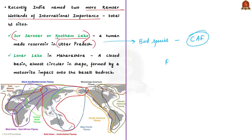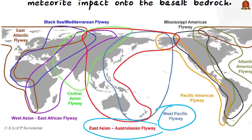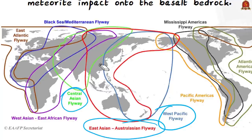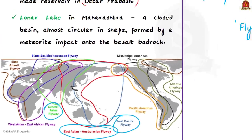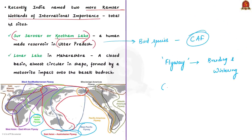There are three migratory flyways across Asia: the West Pacific Flyway, the East Asian-Australasian Flyway, and the Central Asian Flyway. India lies in the core central region of the Central Asian Flyway, which covers areas between the Arctic Ocean and the Indian Ocean. According to the Convention on the Conservation of Migratory Species of Wild Animals (CMS), there are eight flyways around the world. This is one of the reasons why we often see news about migratory birds visiting different sanctuaries in India. Sur Sarover is located on the Central Asian Flyway.